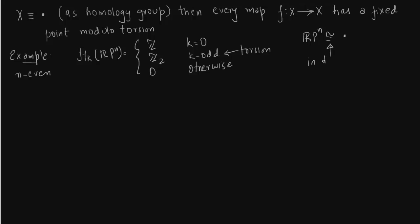So ℝPⁿ is equivalent to a point in terms of torsion-free homology groups.